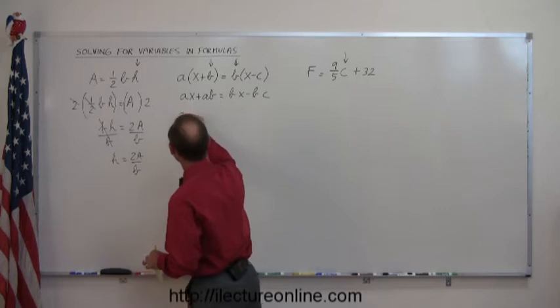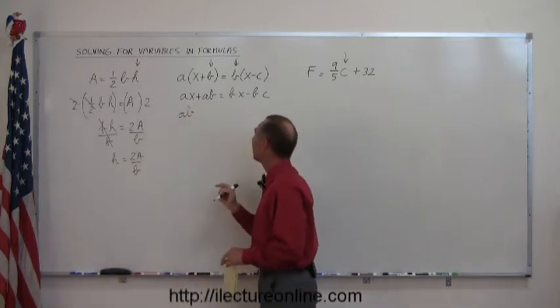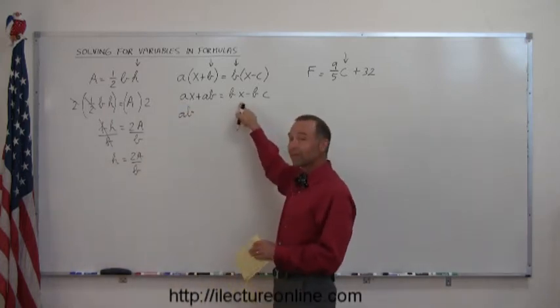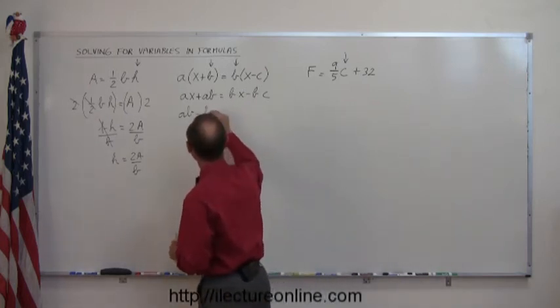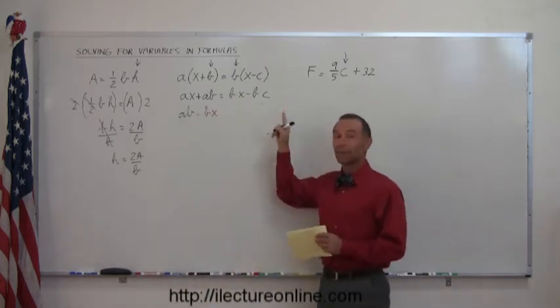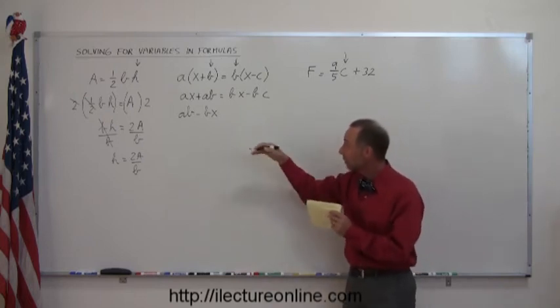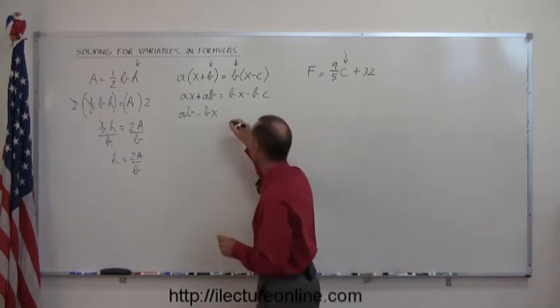Since the AB is already there, that doesn't change, so we'll write it here, AB. The BX is on the right side, we want to move it to the left side, the sign changes, this is minus BX, and over here we have the minus BC on the right side, we want to move that to the left side, that becomes a plus BC.